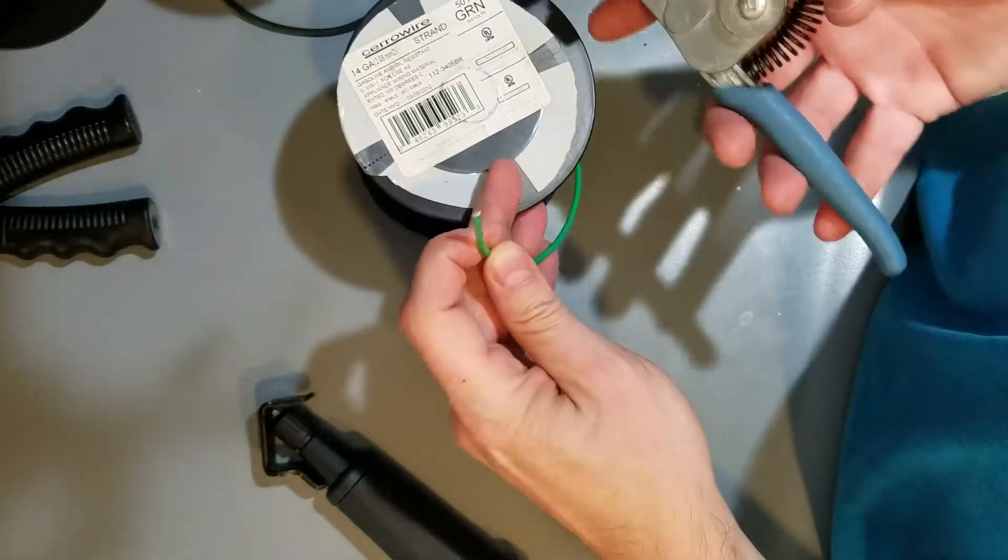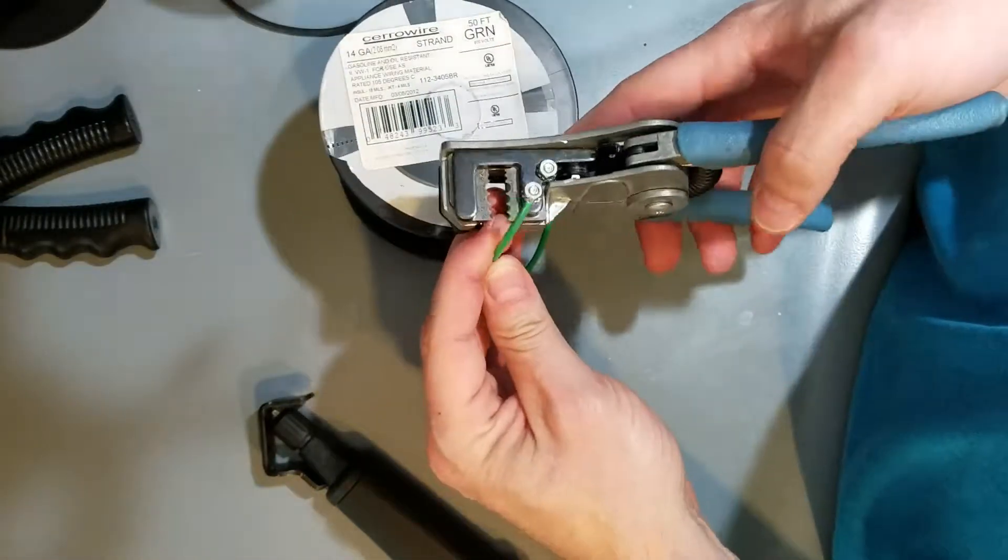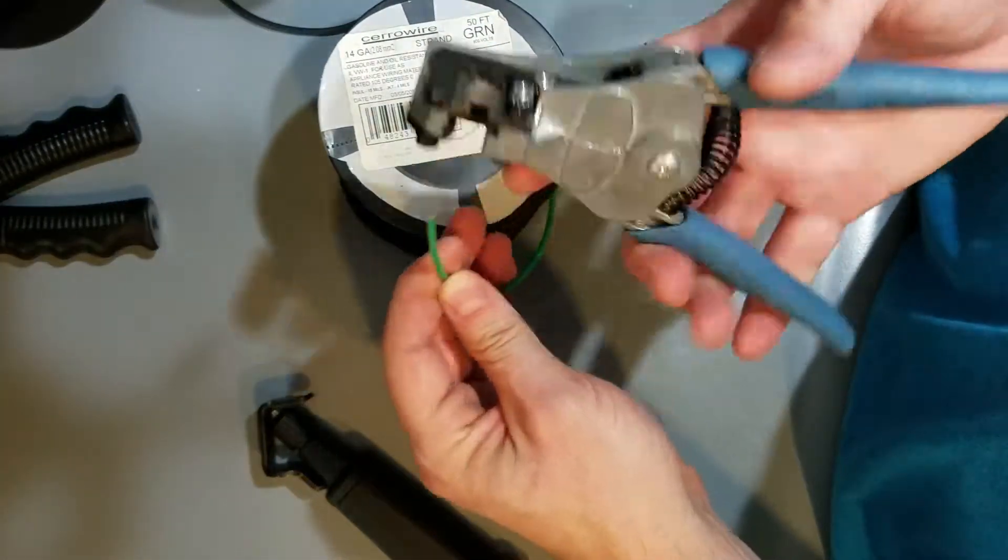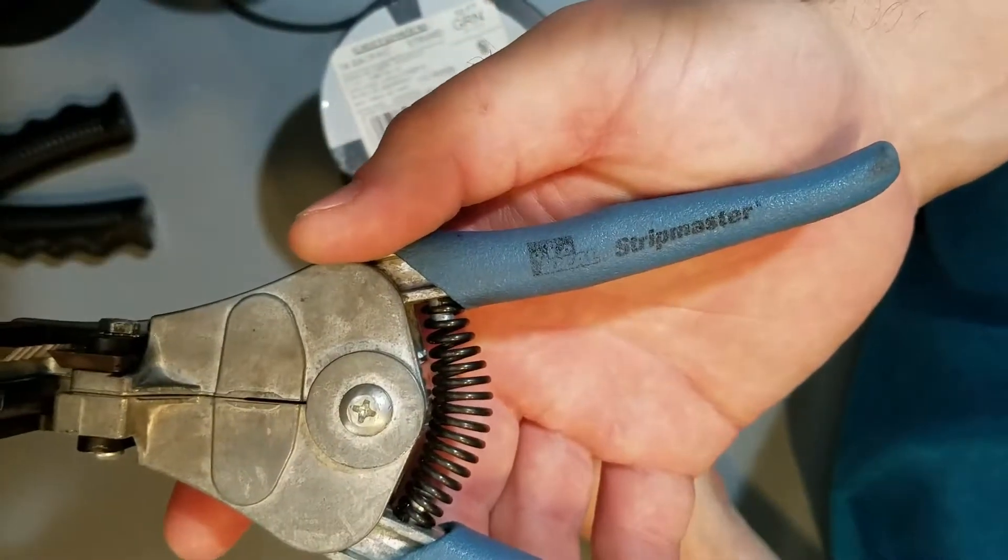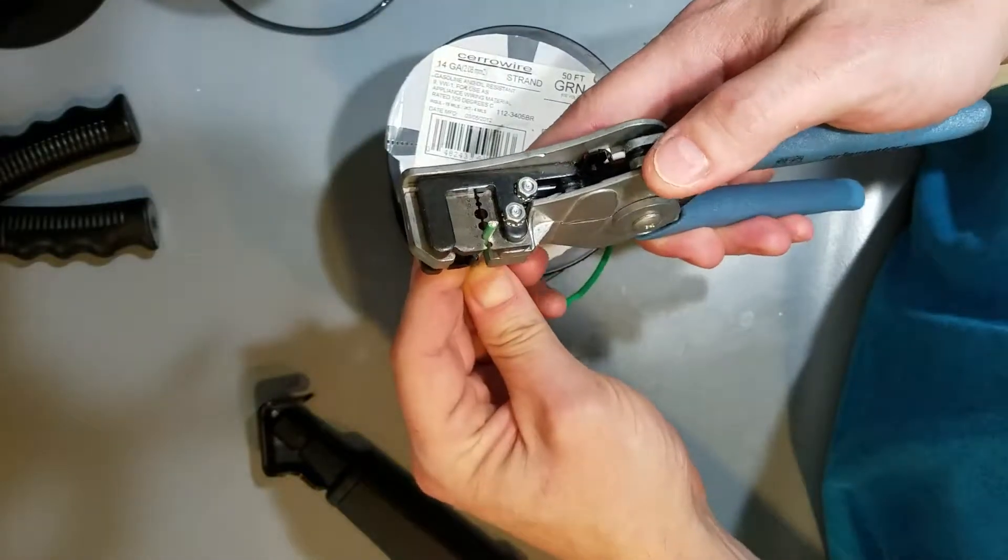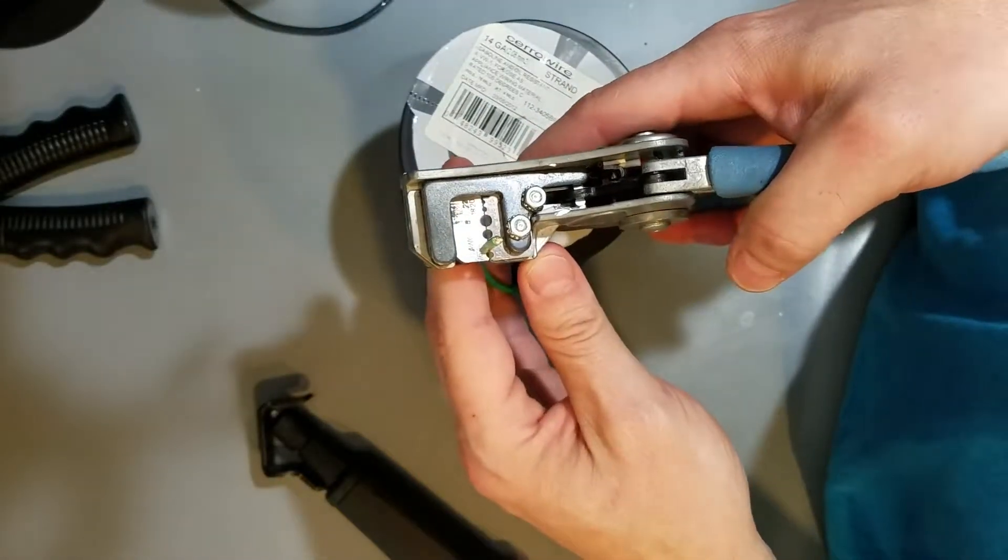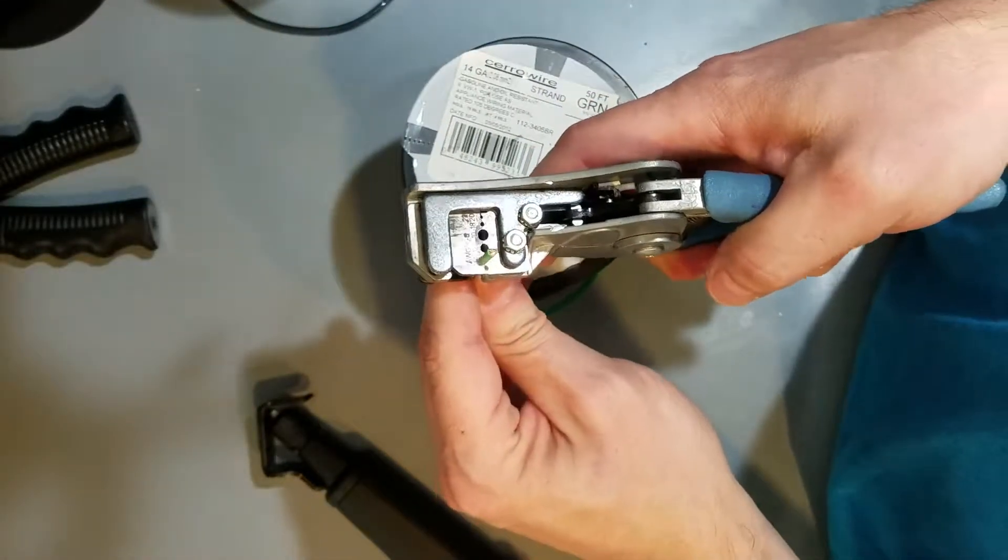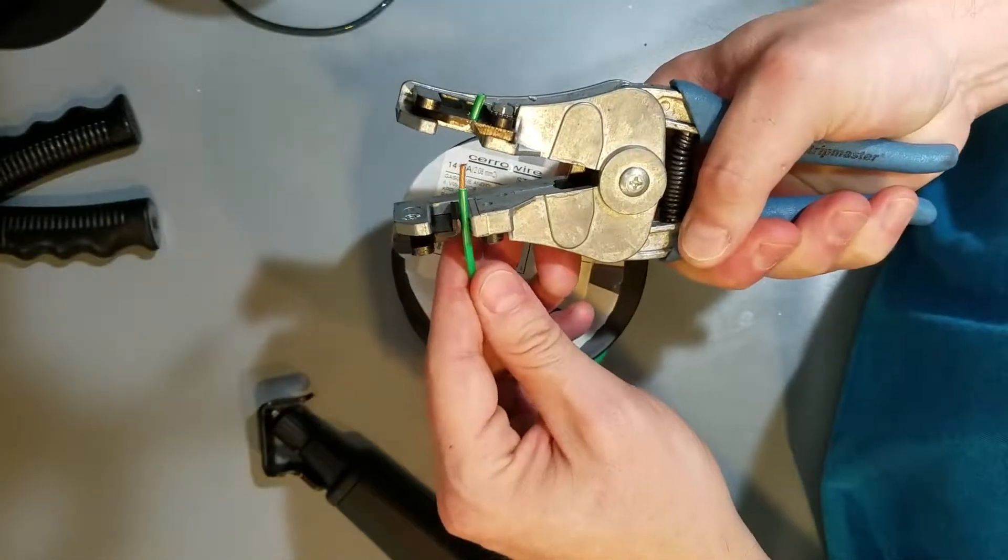But your other option here is to go with one of these guys. This is a—look at that—Stripmaster. We can find our gauge wire that we want to strip, and it comes off real easy.